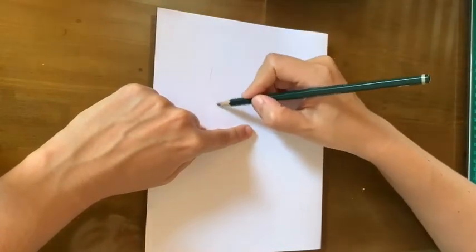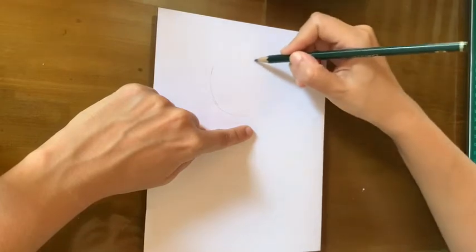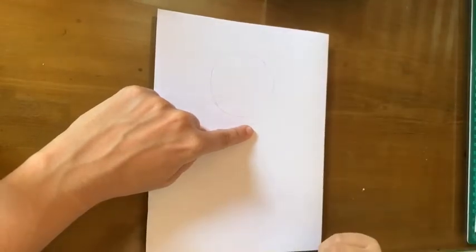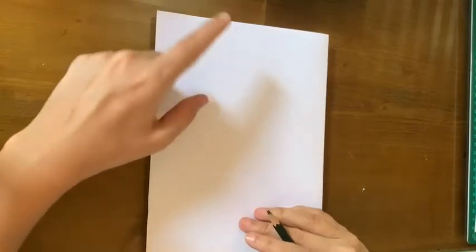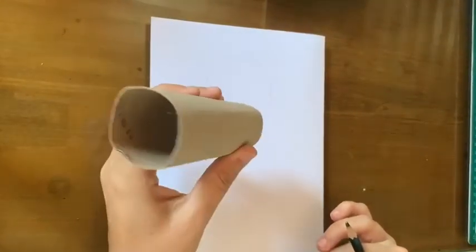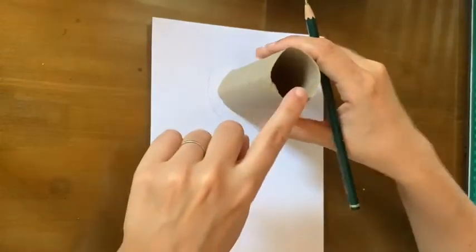Then I will trace a circle, a quite big circle, right here at the top. You might want to use some sort of lid or circle thing that you have, like a toilet paper tube, if you want to trace the circle.